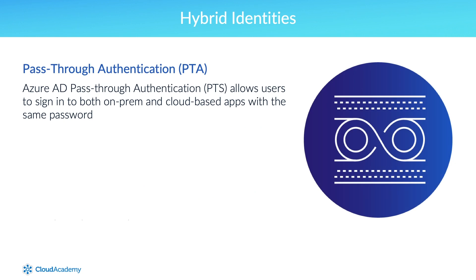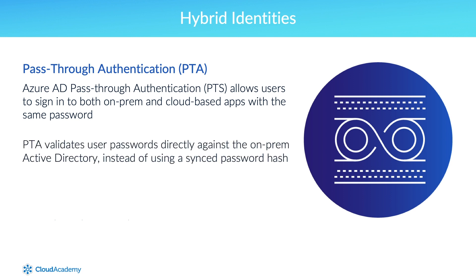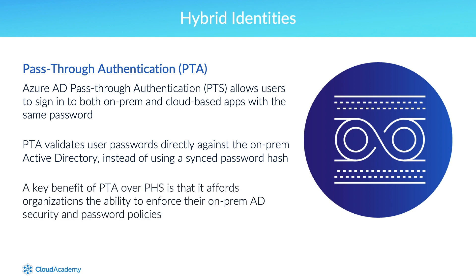Azure AD pass-through authentication, or PTA, much like password hash synchronization, allows users to sign in to both on-prem and cloud-based apps with the same password, offering a better end-user experience. However, pass-through authentication validates user passwords directly against the on-prem Active Directory instead of using a synced password hash. A key benefit of pass-through authentication is that it affords organizations the ability to enforce their on-prem AD security and password policies, since pass-through authentication is actually leveraging the on-prem credentials.